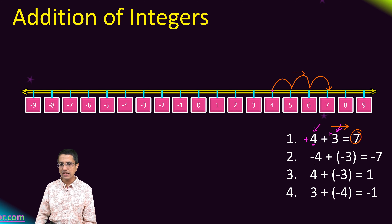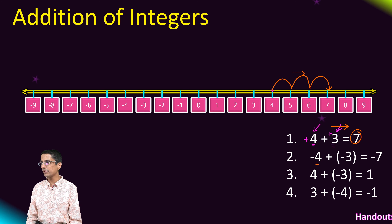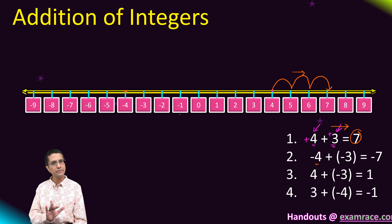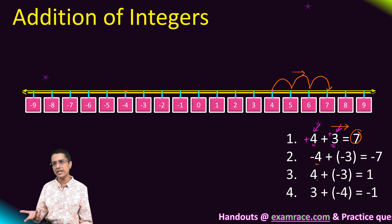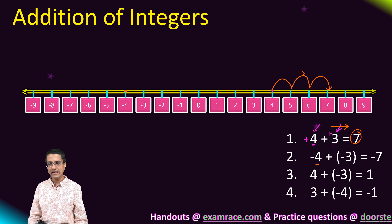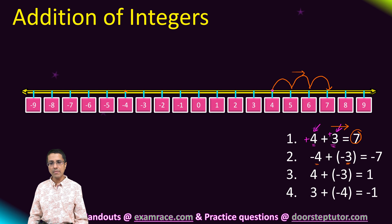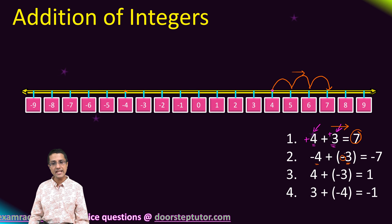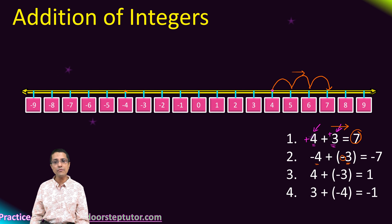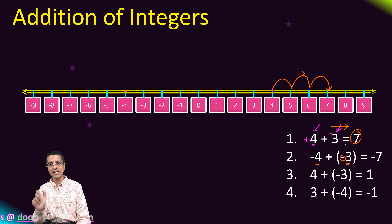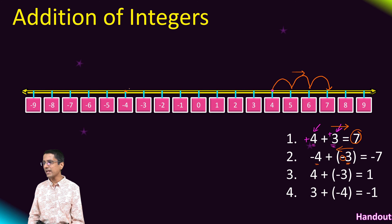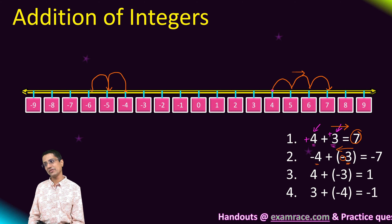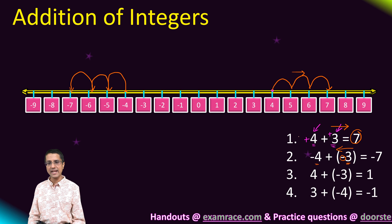Case two: we start from minus four. The second operand has magnitude three but its sign is negative. A negative sign means we go left instead of right. So starting from minus four, we go left by three and end up at minus seven.